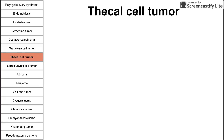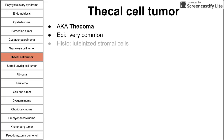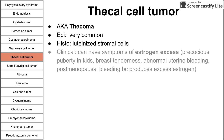Next is the theca cell tumor, also called thecoma. On histology, you see luteinized stromal cells. Clinically, this also presents with symptoms of estrogen excess: precocious puberty, breast tenderness, abnormal uterine bleeding, and postmenopausal bleeding, as it produces excess estrogen.